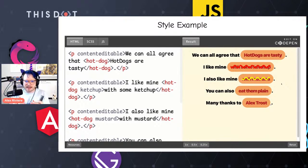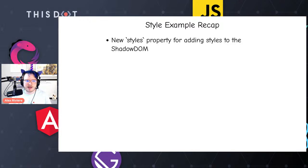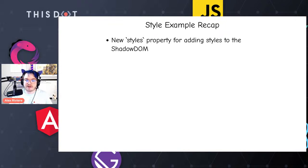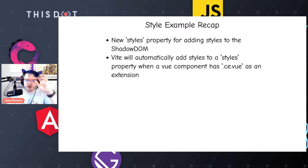Let's recap. The new styles property lets you add styles to the shadow DOM. It's a bit awkward to write styles as strings in an array, so if you're writing a Vue single file component, you can add the .ce.vue extension — .ce for custom element. With Vite and Vue Loader for Webpack, you can write a style block and it will automatically get added to your styles array. Vite will know you're making a custom element and just do it for you.